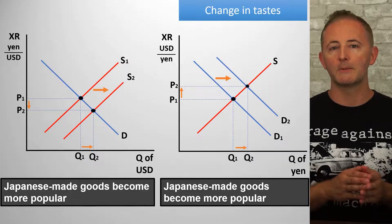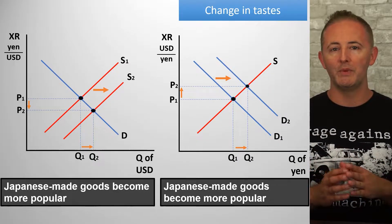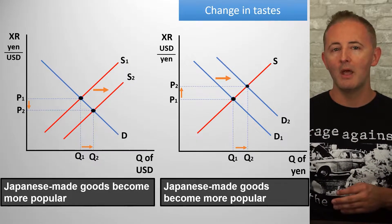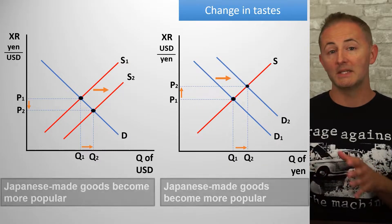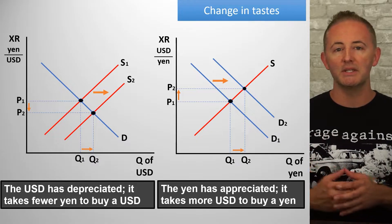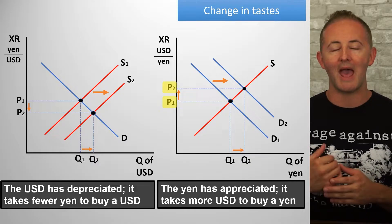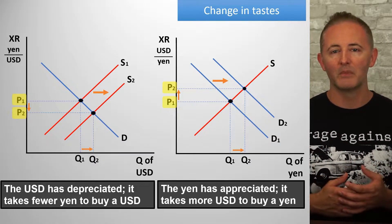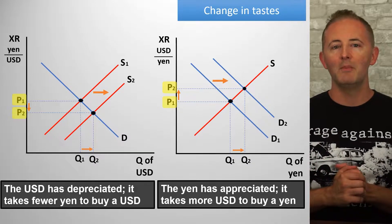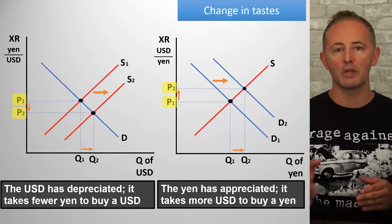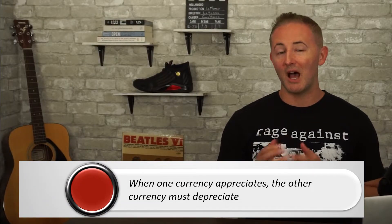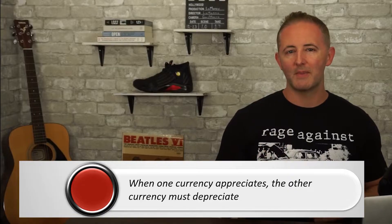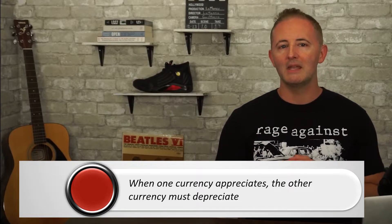When the demand changes for one currency, the supply will change for the other currency. Both shifts will be in the same direction — if we're demanding more yen, the only way we can get those yen is by supplying more dollars. Take a look at what happened to the exchange rate in each country. In this example, the yen appreciated, meaning its value has increased — it would now take more dollars to buy a yen. The dollar, though, has done the opposite: when Americans supplied more dollars, it caused the dollar to depreciate. When one currency appreciates, the other currency must depreciate, because each of them are priced in terms of the other.